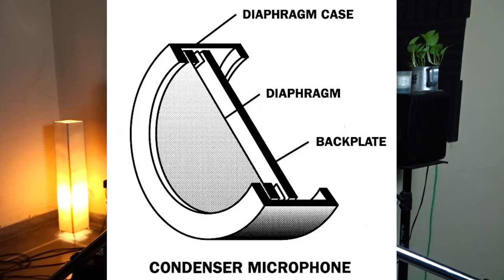On the other hand, there are three parts to a condenser microphone: one is the diaphragm case, which holds everything in place; the second is the diaphragm; and the third is the back plate. A condenser microphone works by having the sound source hit the diaphragm, moving it relative to the back plate, and the changing space between them produces an electrical signal.